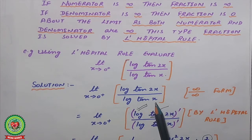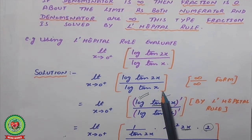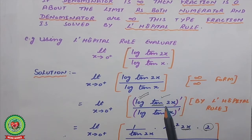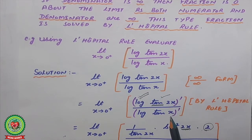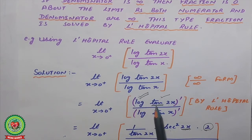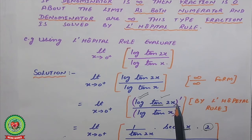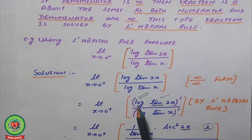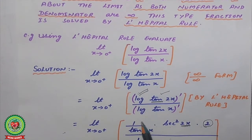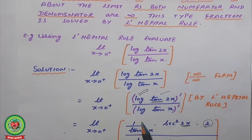Since it is infinity upon infinity, we will solve it by using L'Hôpital's rule — we differentiate the numerator as well as the denominator. The numerator log(tan2x) is a composition of three functions: log, tan, and the angle 2x. We differentiate step by step. First, the differentiation of log gives the reciprocal of the argument: 1 upon tan(2x).